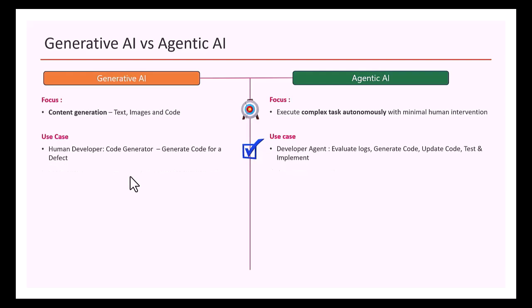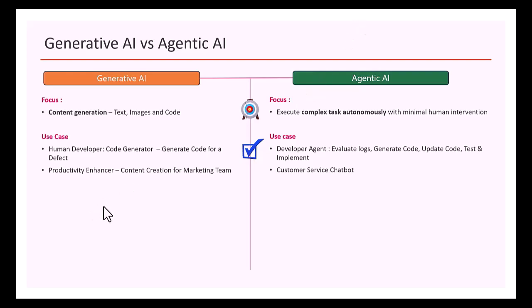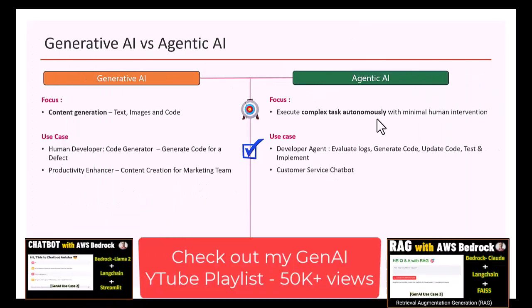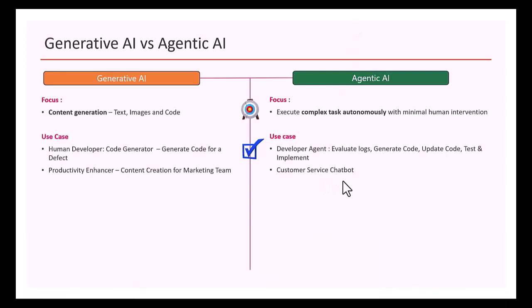Generative AI can also act as a productivity enhancer — for example, a generative AI application for content creation such as press briefings, videos, and brochures for a marketing team. On the other hand, a great agentic AI use case would be a customer service chatbot that answers complex user queries by understanding them, retrieving relevant data from relational, non-relational, or RAG-based solutions, and giving a response back to the end user.